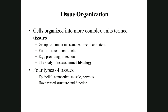There are four main tissue types: epithelial tissue, connective tissue, muscle tissue, and nervous tissue. The rest of the chapter is really about these four tissues, especially the first two — epithelial and connective.